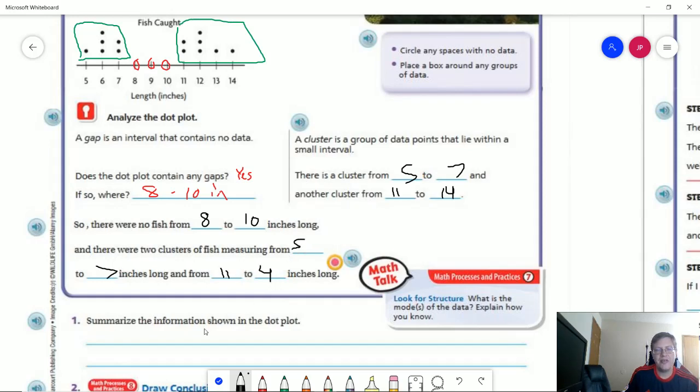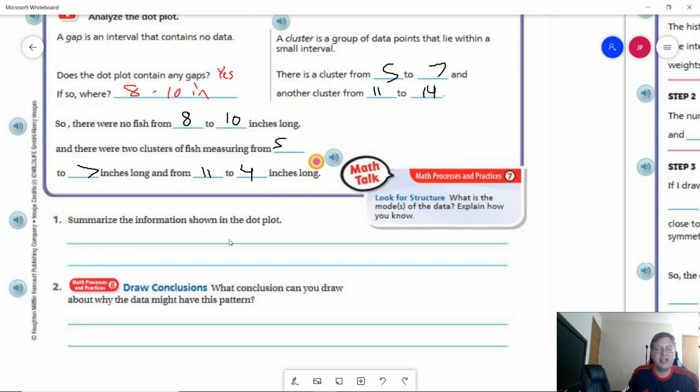And so they want us to summarize. So all of the things that we just talked about could be included in a summary. So we want to talk about grouping or clusters. We want to talk about gaps. We want to just mention general things. So they caught this many fish or they caught fish that were these many inches long. So 5, 6, 7, 11, 12, 13, and 14. So there are a lot of different ways that you could do that. I'm pretty sure that we could probably find more things to say than what we could actually fit on two lines.